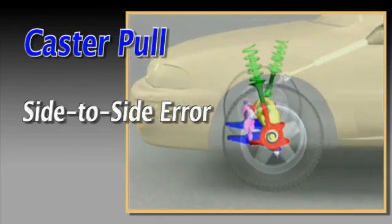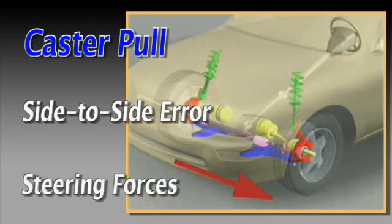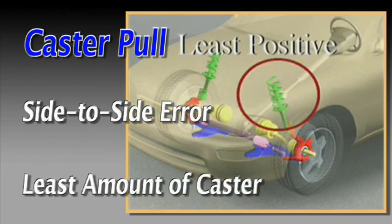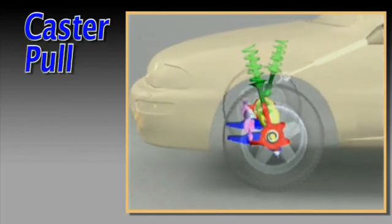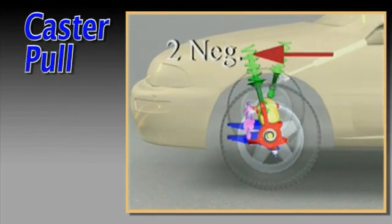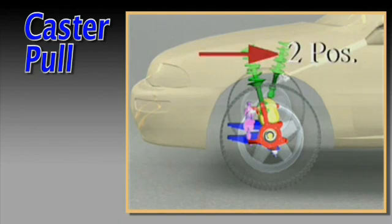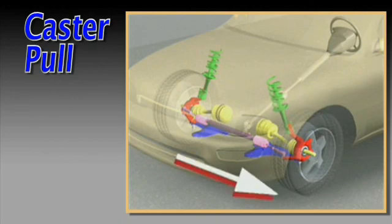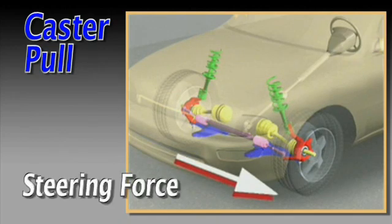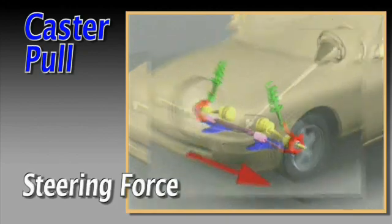If a large side-to-side error occurs, steering force towards the side with the lesser positive caster is created. In this example, caster is 2 degrees negative on the left side and 2 degrees positive on the right. With these settings, steering force will be directed towards the left side, causing a pull.